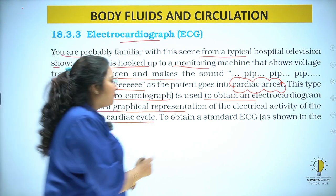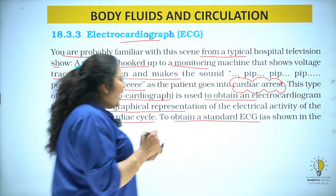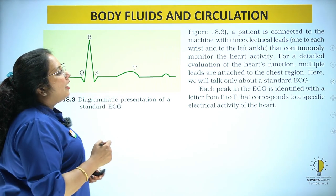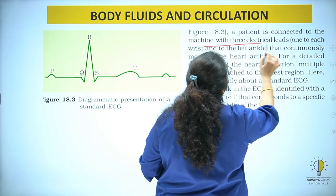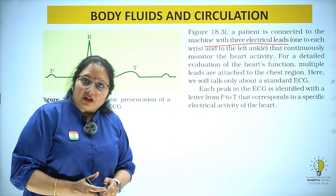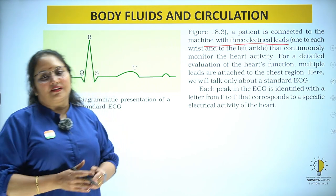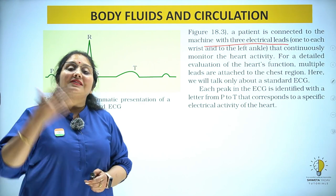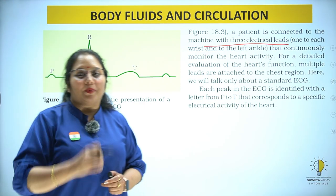To obtain a standard ECG, a patient is connected to a machine with three electrical leads. Whoever needs an ECG is connected with electrical leads. Now the most important thing — why do we do an ECG? Sometimes there is pain in the heart, acute pain, that is angina.